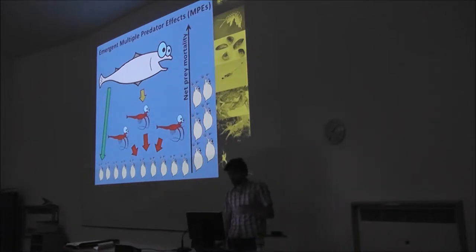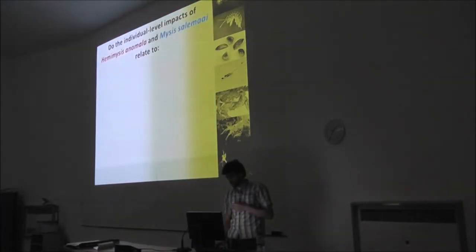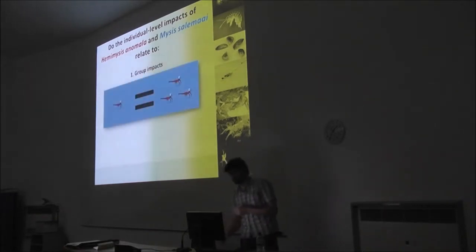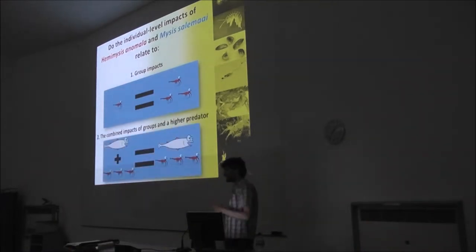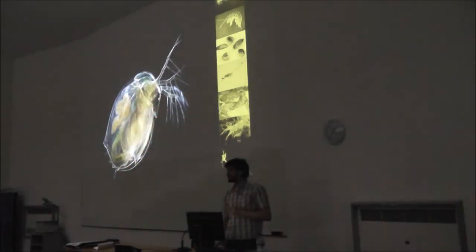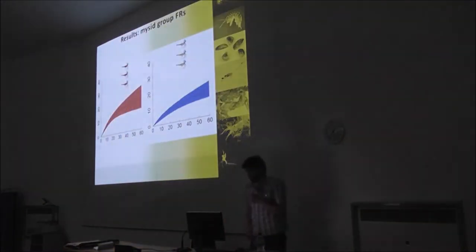So I wanted to understand this in a kind of FR framework. To do this, we used Hemimysis and a native equivalent here, Mysis salemaai, and asked whether essentially, in terms of experimental treatments, whether the FR of an individual mysid multiplied by three, predicted the FR of a group of three mysids foraging together, and then whether the FR of those three mysids added to the FR of a stickleback, predicted what happened when all of these guys foraged together, and what happens when we changed the mysid from an invader to a native. We used Daphnia magna as a basal prey in these experiments simply because it's very easy to culture and quite representative, I think.